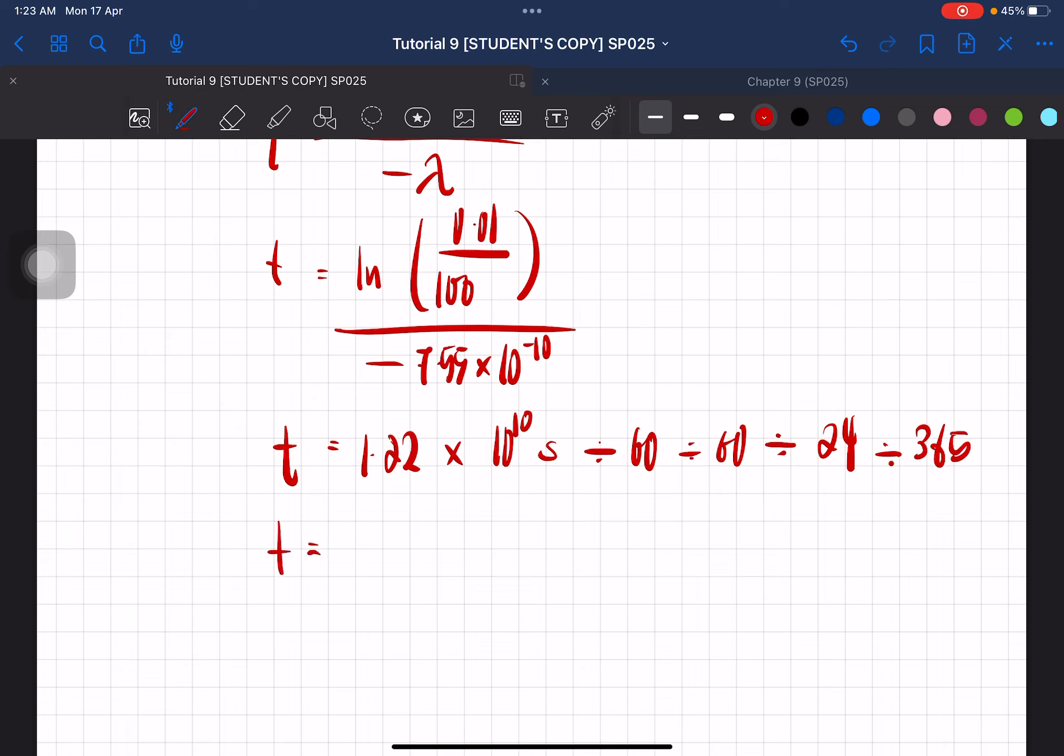I'm just gonna assume it's 365 days. On average, because the years are gonna be different, the days in the years are gonna be different. But we're just gonna use 365 days.